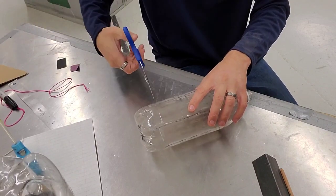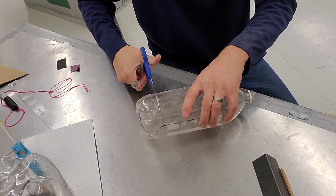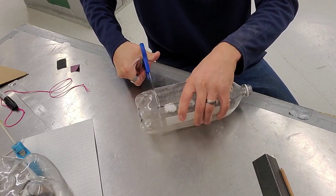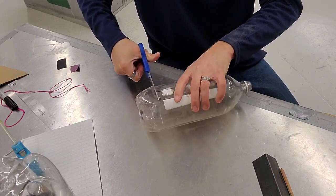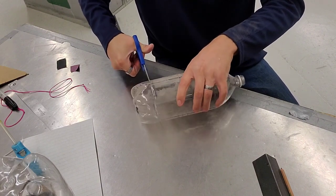Once there's a hole in there, you can take your scissors and you can just cut however you want all the way around that bottle.